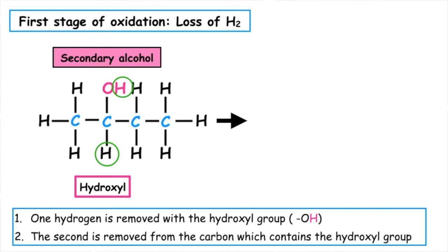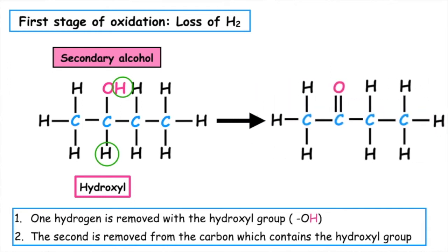When drawing the product, you need to make sure that each element has the correct number of bonds. So now we form a carbon to oxygen double bond.